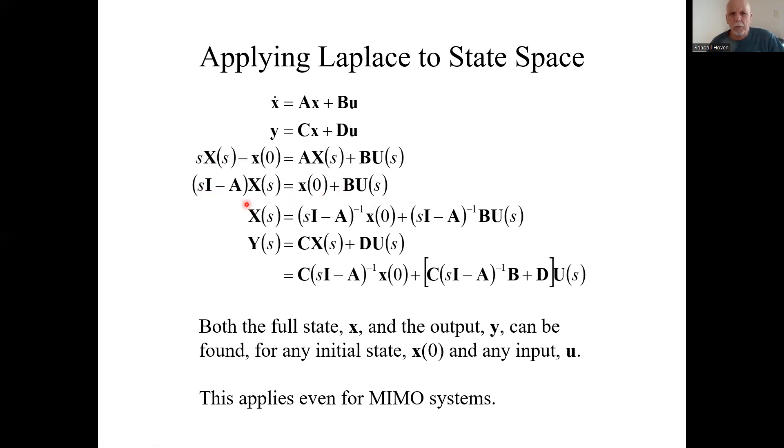Now I can multiply through by the inverse of this sI minus A. Here I have what x of s is. I have the Laplace transform of the state, which means if you give me an input and an initial condition, I can find the Laplace transform of the state. So if I just take the inverse Laplace transform of that, find the state itself.